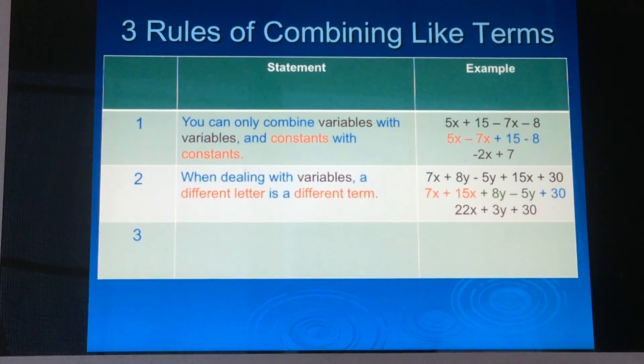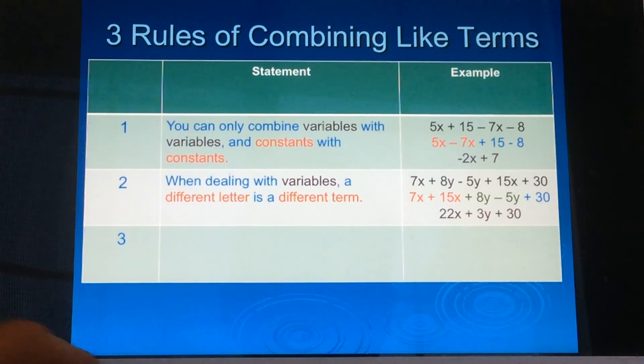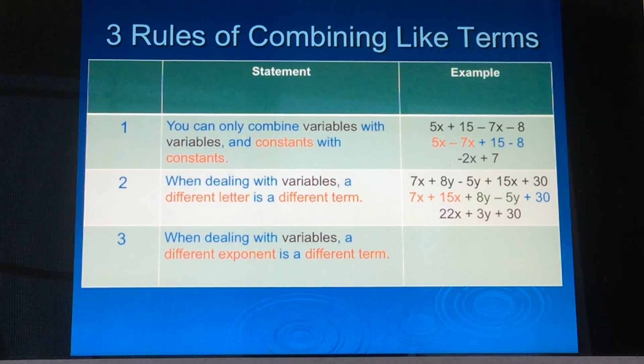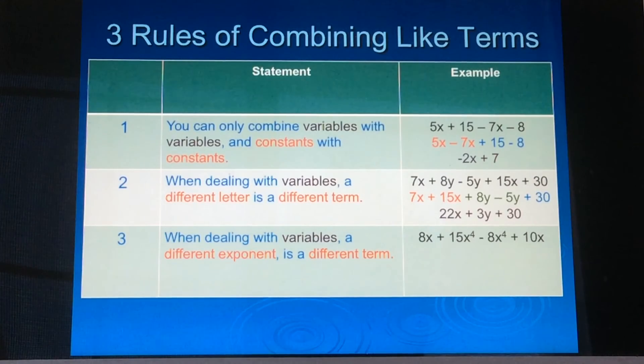Moving on to rule three. Let me adjust this a little bit. There we go, much better. Moving on to rule three. It says when dealing with variables, a different exponent is a different term. Our example, 8x plus 15x to the fourth minus 8x to the fourth plus 10x. So as I look here, I see that I have x's and then I have x to the fourths. Well, the x to the fourths have the same exponent and they have a different exponent than just the variables that have an x in them. So again, that's how I'm going to group this problem. So I'm going to go positive 15x to the fourth minus 8x to the fourth plus 8x plus 10x. And when I simplify that, we should get 7x to the fourth plus 18x. Okay, again, if you need to, please pause your computer right now so that you can write these down and have a better understanding and can refer.